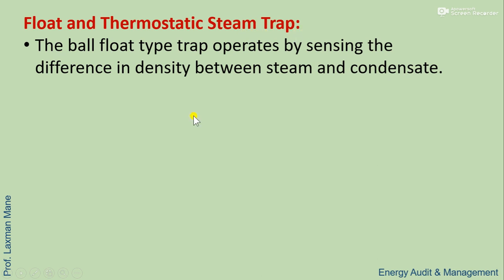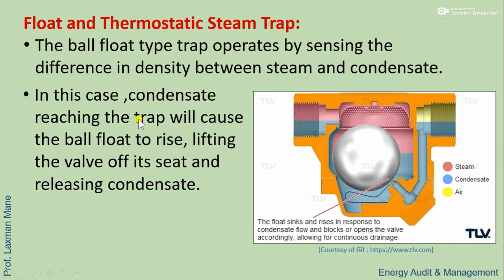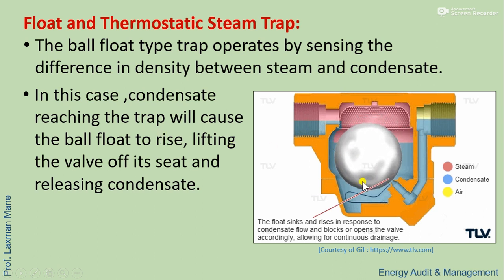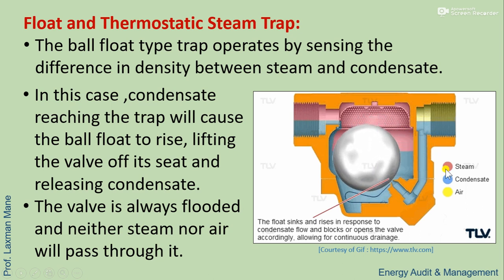The float and thermostatic steam trap: the ball float type operates by sensing the difference in density between steam and condensate. Condensate reaching the trap causes the ball float to rise, lifting the valve off its seat and releasing condensate. The valve is always flooded and neither steam nor air passes through — it allows only condensate. In this animation, red represents steam, blue represents condensate which is moving, and yellow represents air.